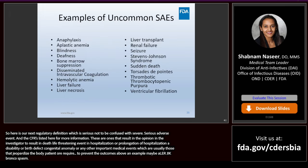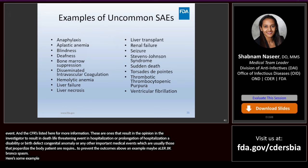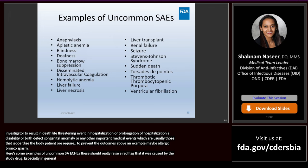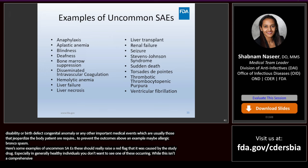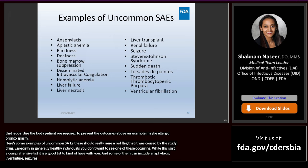Here are some examples of uncommon SAEs. These should really raise a red flag that there may be a possibility that the AE was caused by the study drug, especially in a study population of generally healthy individuals. Some of them can include anaphylaxis, liver failure, seizures, torsades de pointes, and others. Serious adverse events, like any other adverse events, need to be assessed for drug-related causality.